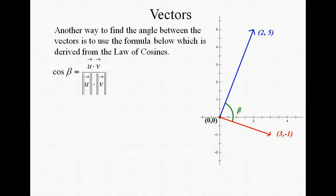We have another way of finding the angle between the vectors, and it's a formula derived from the law of cosines. We have the cosine of angle beta, which is the angle between the two vectors, is equal to the dot product of the two vectors divided by the product of the magnitudes of the two vectors.